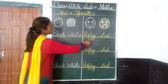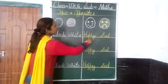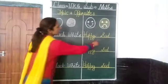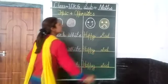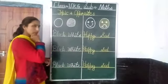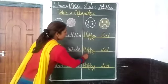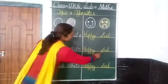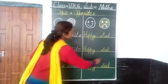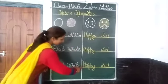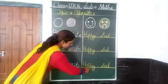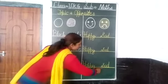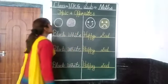Next word: happy — H-A-P-P-Y. Happy means khush. S-A-D, sad means dukhi. Again: H-A-P-P-Y, happy means khush. S-A-D, sad means dukhi. H-A-P-P-Y, happy means khush. S-A-D, sad means dukhi.